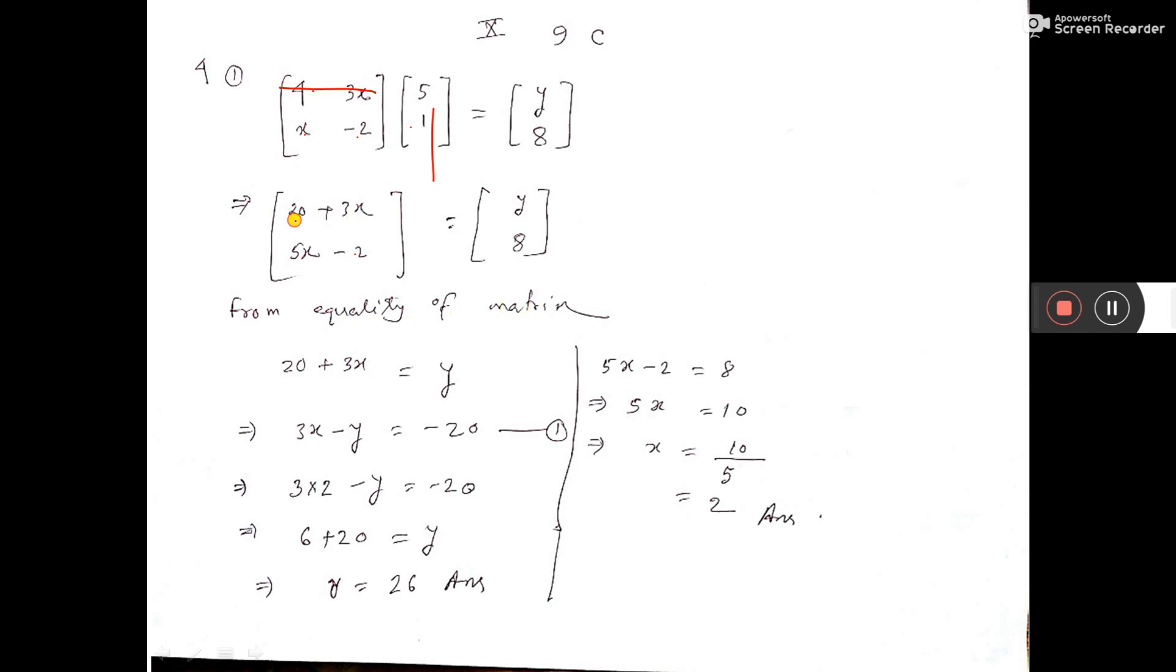Now from equality of matrices, you make 20 plus 3x equal to y, that is written here, and 5x minus 2 equals 8, that is here.